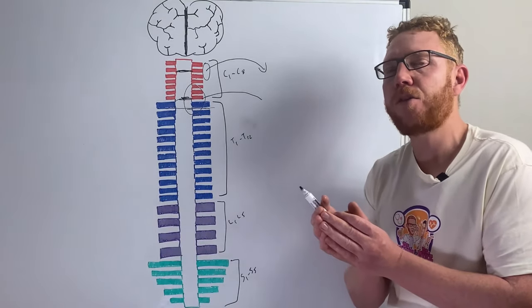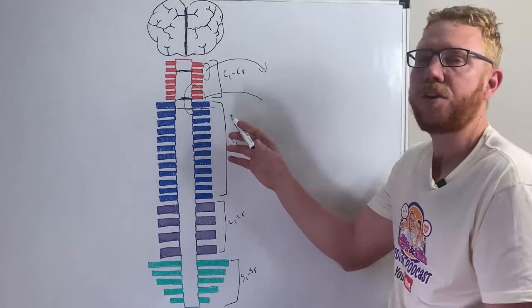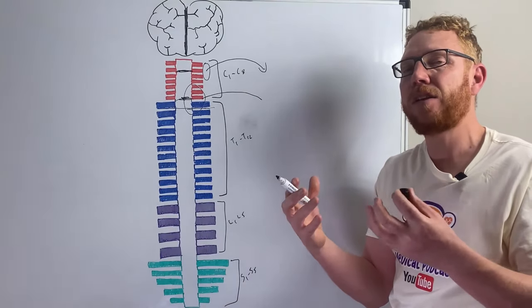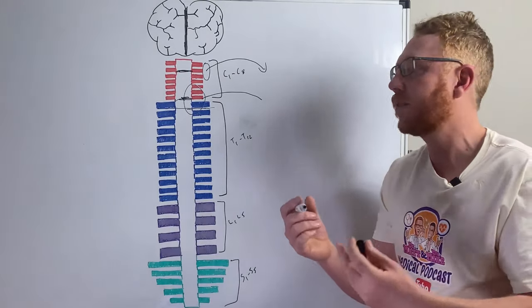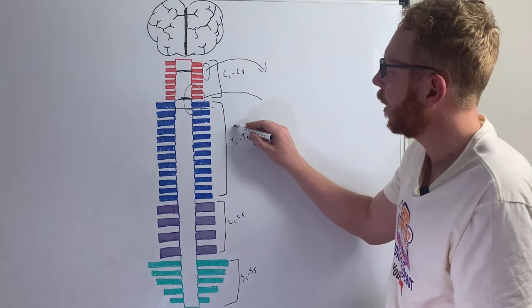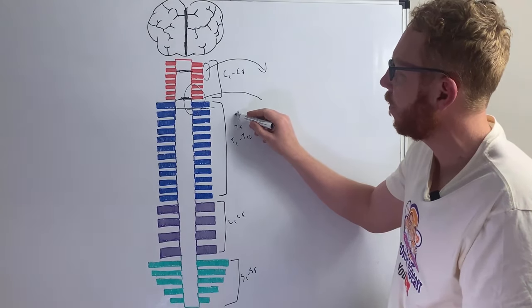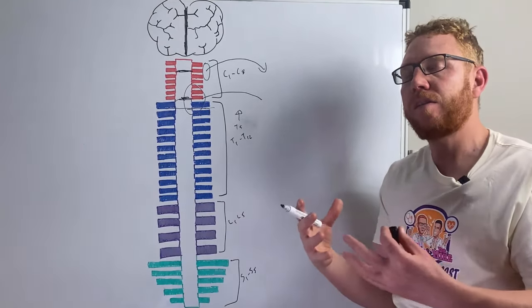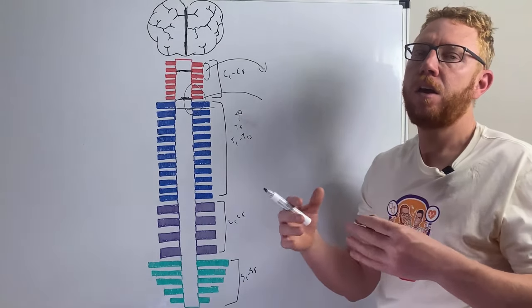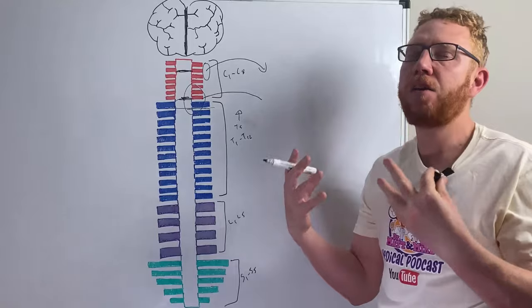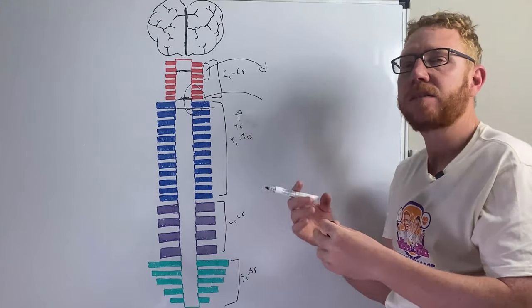Another function of the thoracic region is a part of the nervous system we call the autonomic nervous system or the sympathetic nervous system, which controls blood pressure, heart rate, sweating, etc. So if there is an injury about T5 and above, this will impact this system, and therefore there can be a syndrome known as autonomic dysreflexia, which impacts blood pressure, heart rate, sweating, headaches, etc.